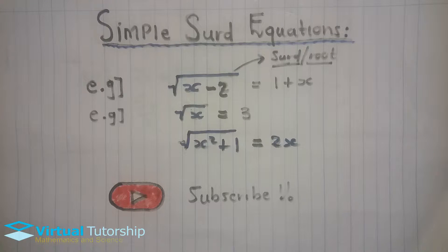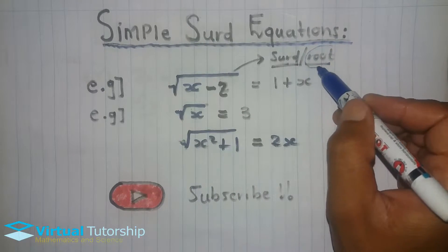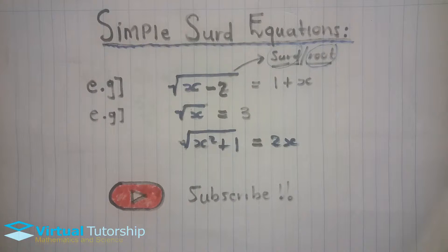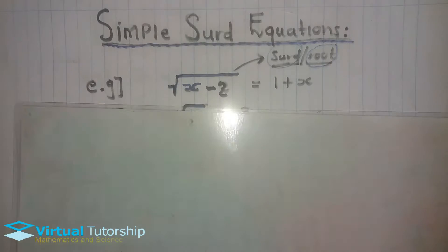In today's lesson we cover surd equations. Surd equations are equations with a square root. The square root is classified as a root or a surd. Surd equations are not only limited to square roots — you can also have a third root or fourth root — but for this particular lesson we focus on surd equations with a square root.